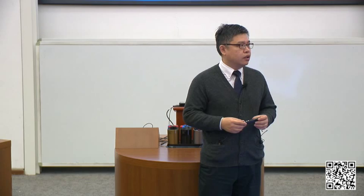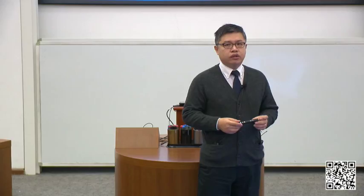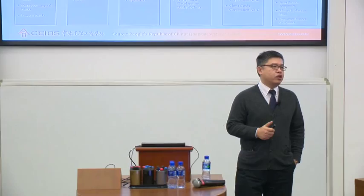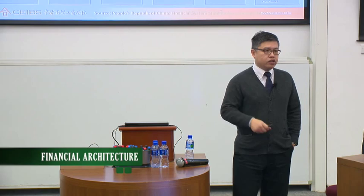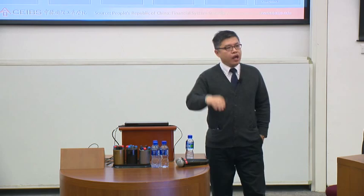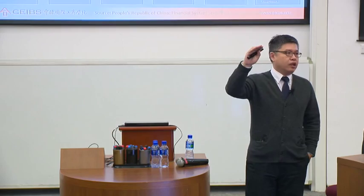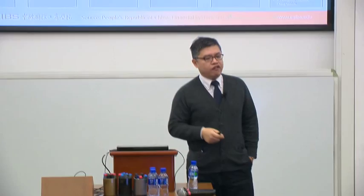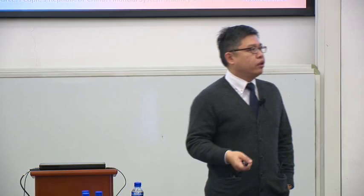This is the financial architecture in China. Once you understand this picture, you pretty much understand 80% of the financial system in China. From this diagram, there are four layers. At the top is the National People's Congress, which is the highest power agent in China, in theory. It promulgates all financial sector laws — for example, bankruptcy laws, company laws, security laws, insurance laws, and banking laws.